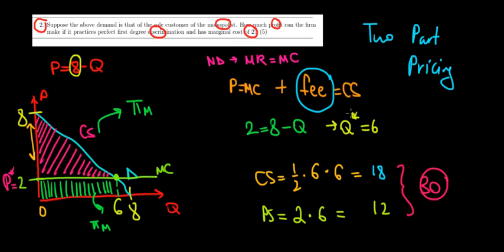That would be the profit that he's making if he uses this perfect first degree discrimination. Hope this makes sense. In the next two videos, we'll see the difference between Cournot and Stackelberg competition.